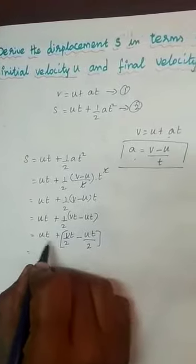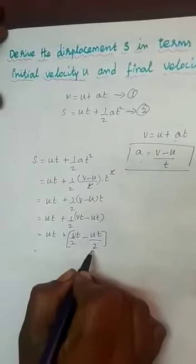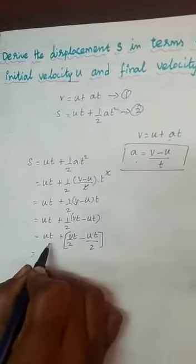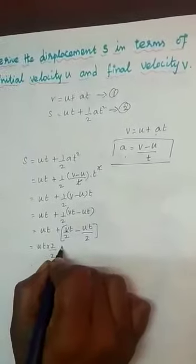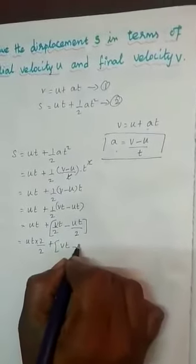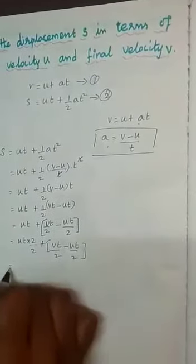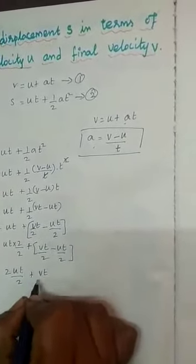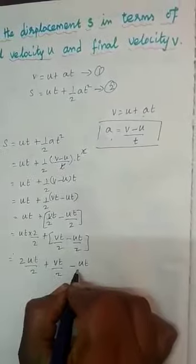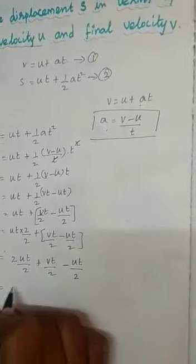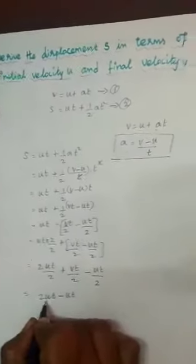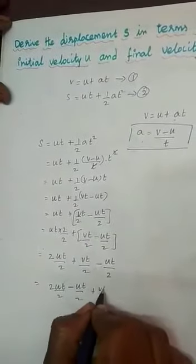Now, we are seeing the terms U T plus V T minus U T by 2. The first term U T should be multiplied and divided by 2, giving U T into 2 divided by 2, plus V T minus U T by 2. So, it becomes 2 U T divided by 2, plus V T by 2, minus U T divided by 2.